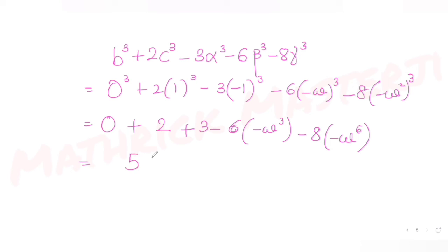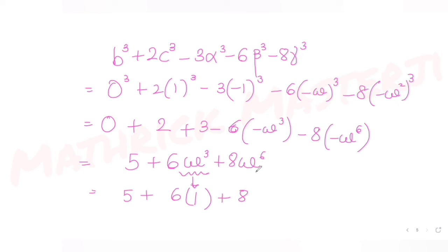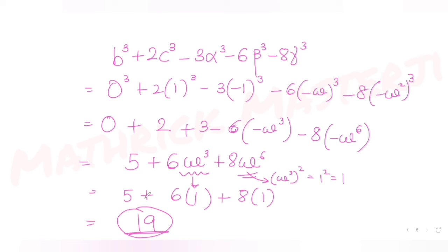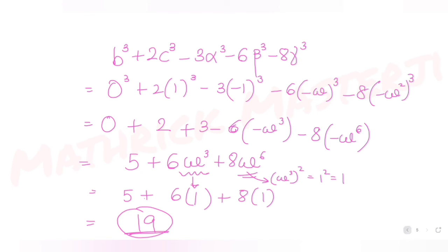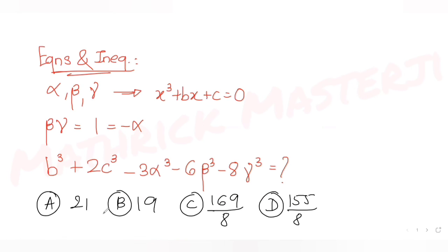Simplifying: five plus six omega cubed plus eight omega to the sixth. Since omega cubed equals one, omega to the sixth equals one squared equals one. So we get five plus six times one plus eight times one equals five plus six plus eight equals nineteen. The answer is 19, which matches option B. So B is the correct answer.